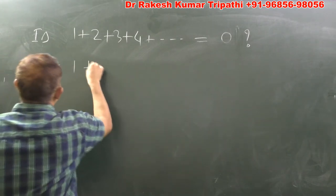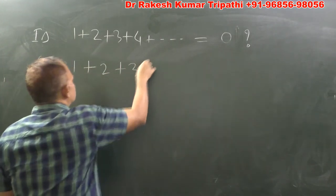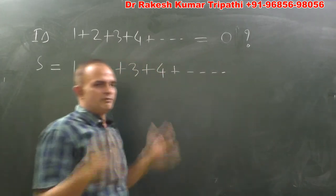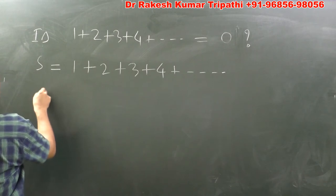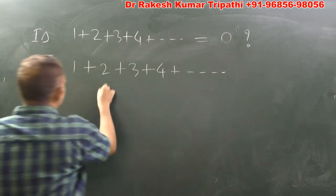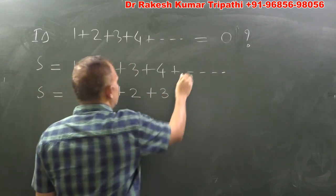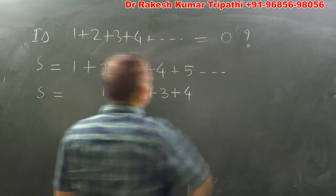Let's say sum of this series is S, which is 1 plus 2 plus 3 plus 4 and so on up to infinity. Now I write this S as 1 plus 2 plus 3, and here you will have 5, so here I need to write 4 because I have shifted this series by one term, so it is again up to infinity.